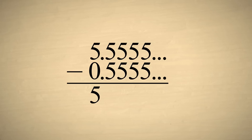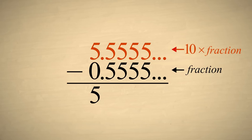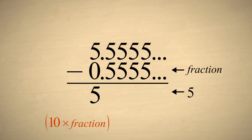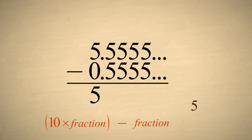We know that our original decimal number is equal to some fraction, but we don't yet know what that fraction is. However, we do know that when it is subtracted from ten times itself, we get five. Let's write this statement as an equation: ten times the fraction, minus the fraction, equals five.